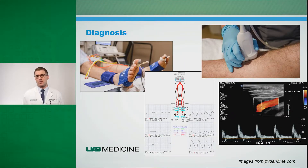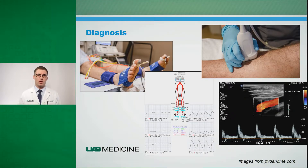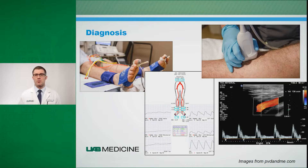Diagnosis is typically made initially with non-invasive studies, so ultrasound studies or blood pressure cuffs around the ankles and the toes can be used to compare the blood pressure in your legs to the blood pressure in your arms, which can tell us if there are blockages along the way.